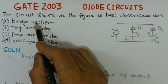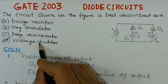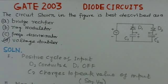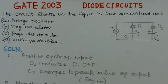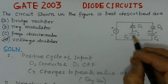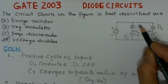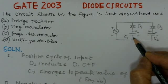Now we will see another problem on diode circuits. This problem is from GATE 2003 and is quite similar to the earlier problem—maybe even simpler than the problem we discussed earlier.